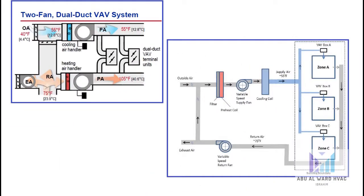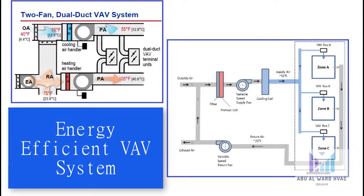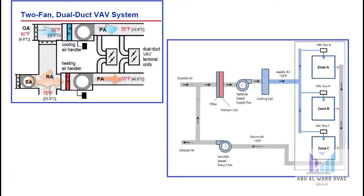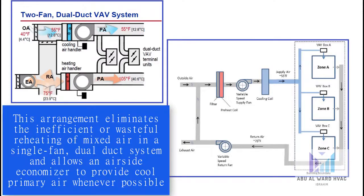This is the second configuration: the two fan dual duct VAV system. Dual duct systems can be very energy efficient when the mixing of cool and heated air is avoided and two supply fans are used — one for heating and the other for cooling. This arrangement eliminates the inefficient reheating of mixed air found in a single fan dual duct system.